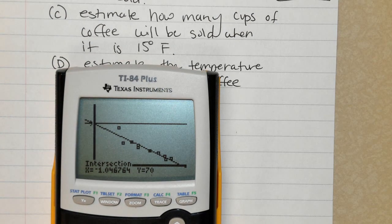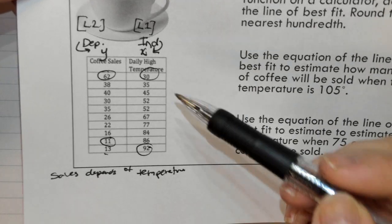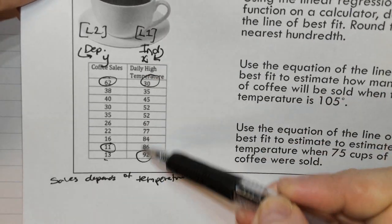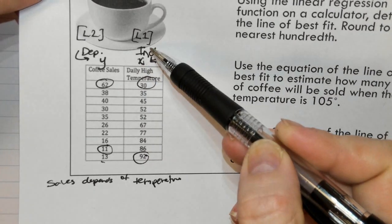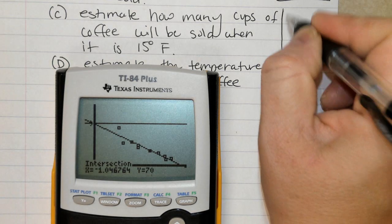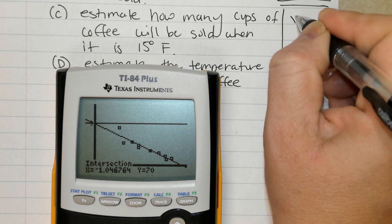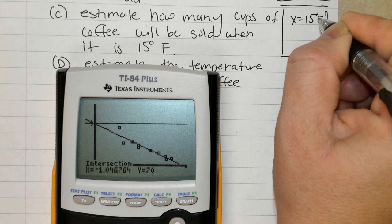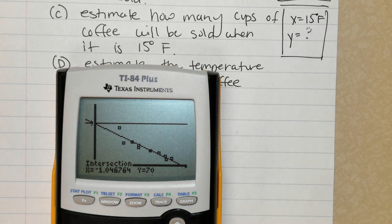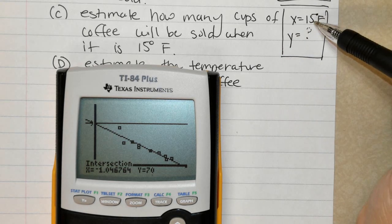Estimate how many cups of coffee will be sold when it is 15 degrees Fahrenheit. So I'm given temperature. I come back here again. I'm given temperature. Okay, temperature is an X value. Temperature is an X value. So I know X. So X equals 15. Remember, when you're given the X, it's not too bad. Now, here's one thing you need to consider. Is X currently in the range, or do we need to adjust the range? So hit Windows.